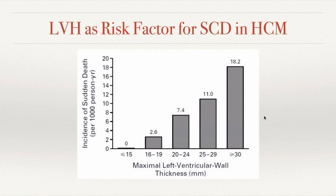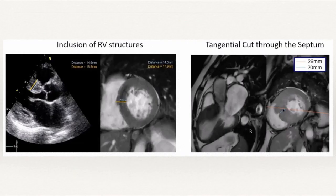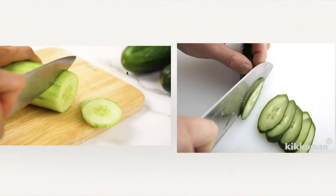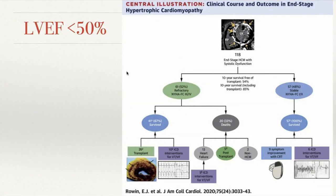For massive LVH, the cutoff used is 30 mm, which significantly increases SCD risk — though this isn't a magic number where risk suddenly goes up; it's a gradual increase. When measuring, be perpendicular to the wall of the septum, not including any RV structures, and avoid a tangential cut that can make it look bigger than it is. This is like cutting a cucumber: a perpendicular cut gives the actual diameter, while cutting diagonally makes it look bigger.